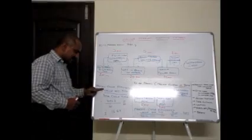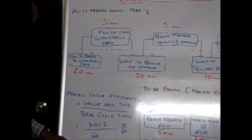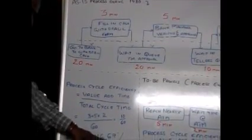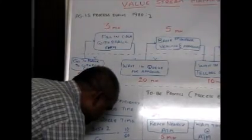It is basically the value add time by total cycle time, which is 10 minutes by 60 minutes, which is 1 by 6, which is 16.67 percent. Close to 17 percent.